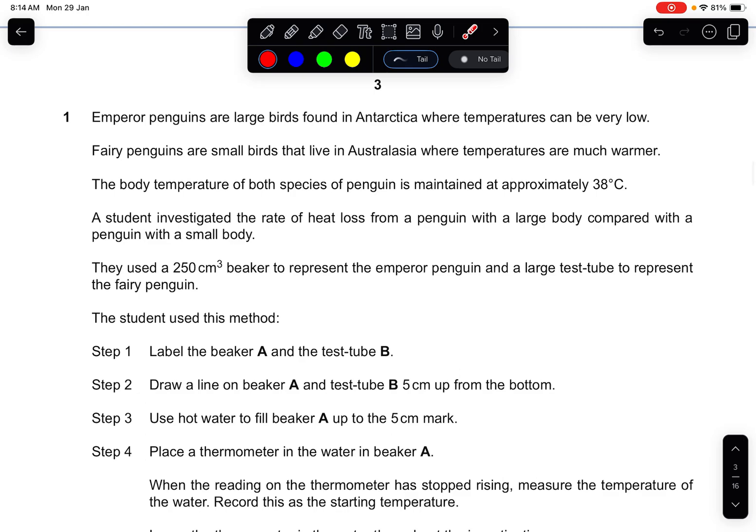Let's start with the first question. They tell you emperor penguins are large birds found in Antarctica where temperatures can be very low. Fairy penguins are small birds that live in Australasia where temperatures are much warmer. The body temperature of both species of penguin is maintained at approximately 38 degrees. A student investigated the rate of heat loss of a penguin with a large body compared with a penguin with a small body.